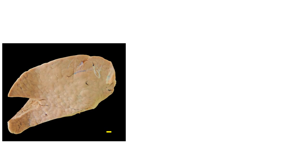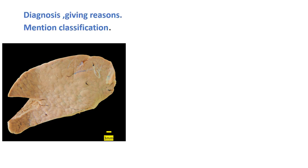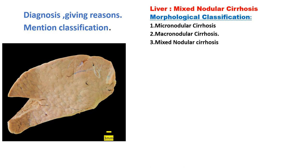This is another slice showing similar features of large and small nodules — some smaller than 3 mm and some larger than 3 mm. There is an original thread from the museum specimen which could not be removed. The question asks for diagnosis with reasons and classification of cirrhosis. This is again a case of mixed nodular cirrhosis.